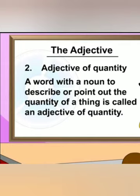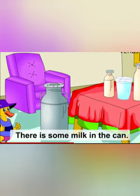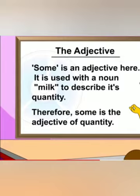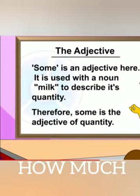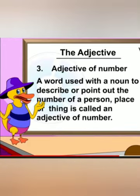Next is adjective of quantity. A word used with a noun to describe or point out the quantity of a thing is called an adjective of quantity. For example, there is some milk in the can. Here, some describes the milk, so it is the adjective of quantity and it gives the answer of how much.